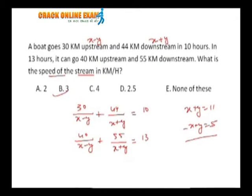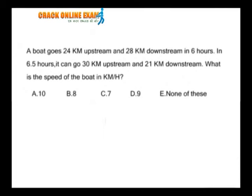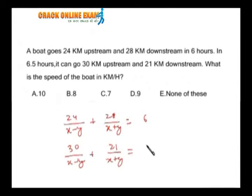I will take one more to elaborate this. Here it is: 24 kilometers upstream, so 24 upon x minus y, plus 28 downstream, and the total time is 6 hours. And 30 kilometers upstream and 21 kilometers downstream, and the total time is 6 and a half hours, or you can say 13 by 2 hours.